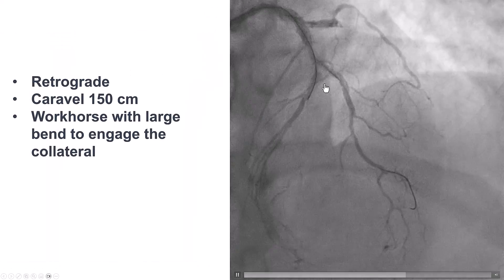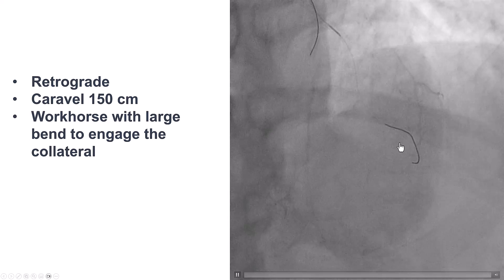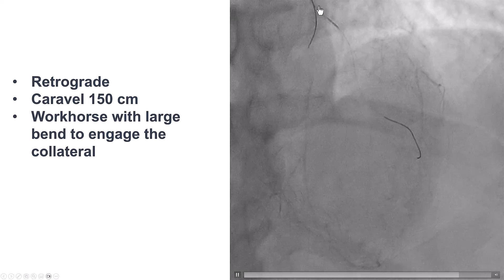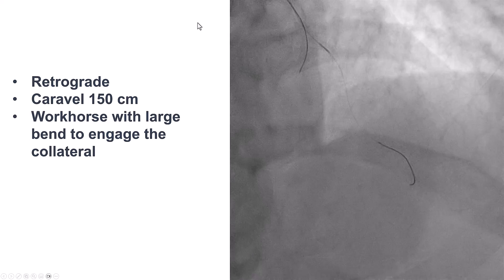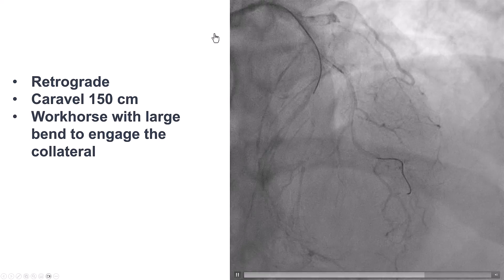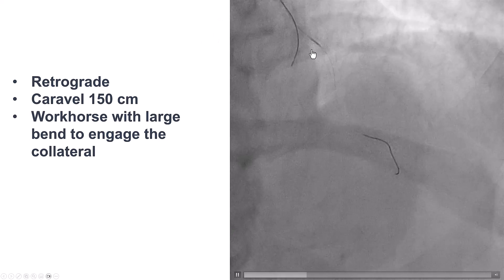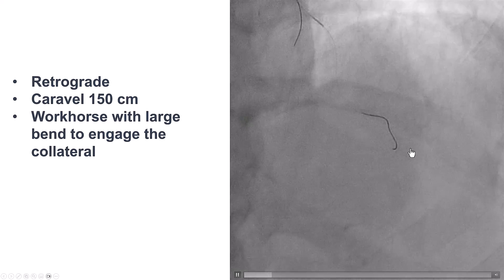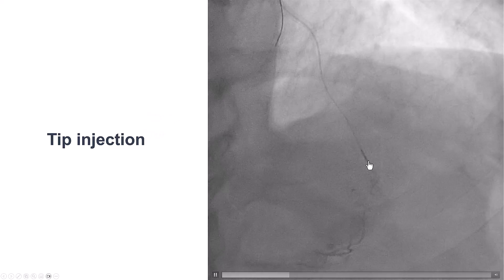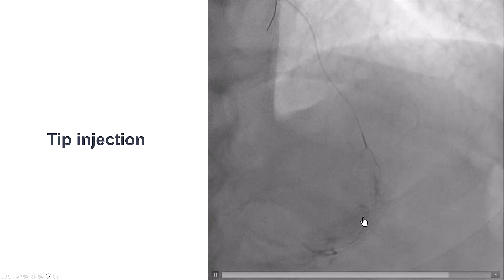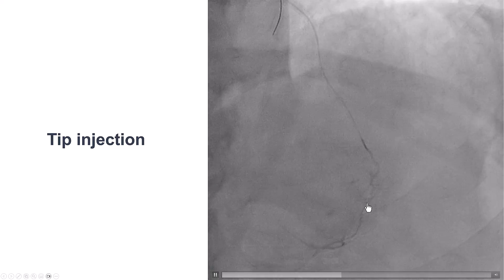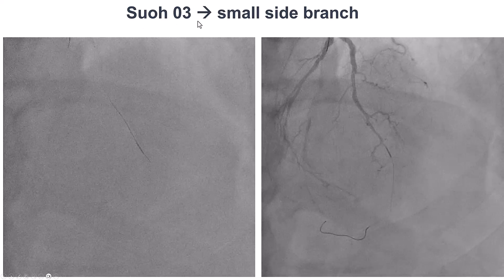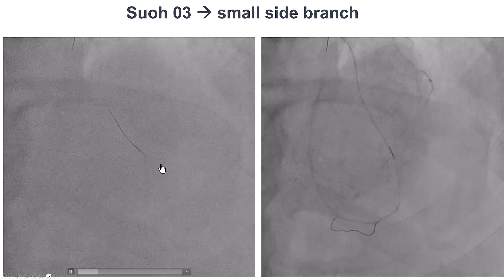After this failure, we decided to go retrograde. We had a 150-centimeter Caravel, and unfortunately we did not have a 90-centimeter guide — so this is a 100-centimeter guide with a 150-centimeter Caravel. We used a workhorse wire to get into the diagonal, performed a tip injection, and there was some tortuosity. The vessel was relatively small but connected nicely to the LAD, so we used the SUO3, which is a standard guide wire for crossing through epicardial collaterals.